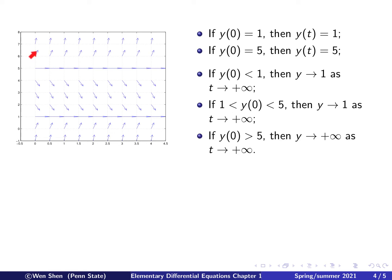And finally, if initial value is bigger than 5, then we see here, all the arrow points upward. The solution will go upward, and the slope will increase, and it will just go to plus infinity.